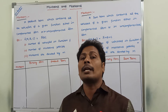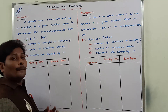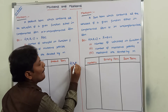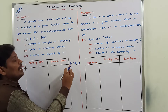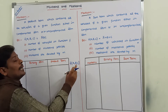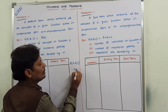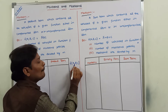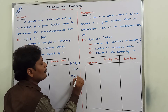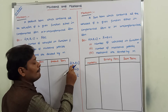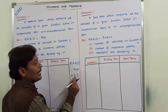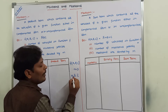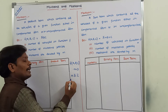Before going to the definition of min term, first of all, what is the product term? Suppose I am taking a function f(a, b, c). This function contains three variables: a, b, and c. So n is equal to 3. Now I am taking variable a directly, complement of variable b, and complement of variable c. The product of these three variables becomes a·b̄·c̄. So then it becomes a product term.